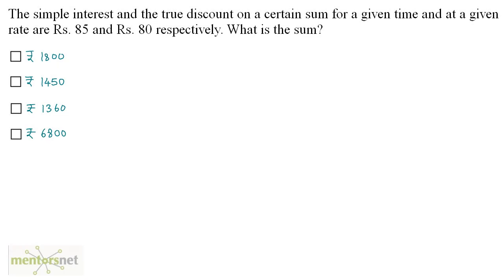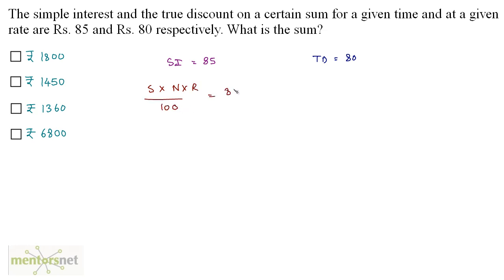Simple interest and the true discount on a certain sum for a given time and at a given rate are 85 rupees and 80 rupees respectively. What is the sum? We have been given simple interest as 85 rupees and true discount as 80 rupees. Simple interest is calculated on the sum itself, so simple interest equals sum S times N times R upon 100, which equals 85. Let this be equation 1.